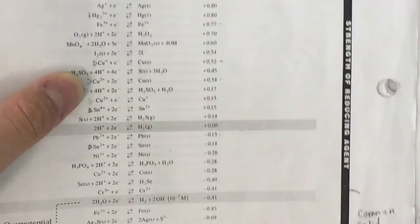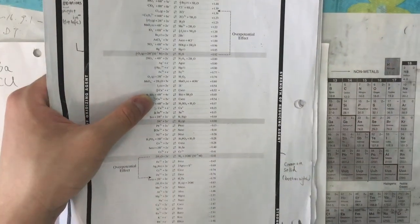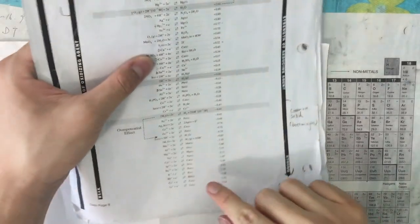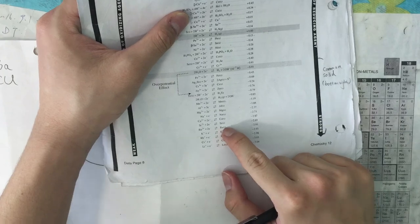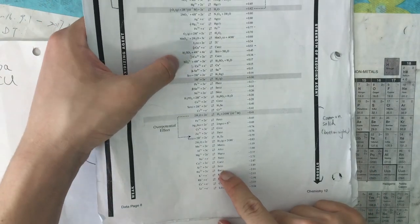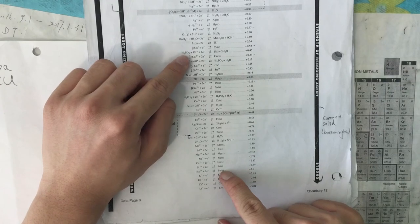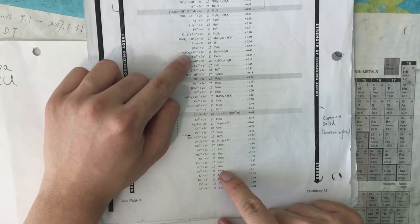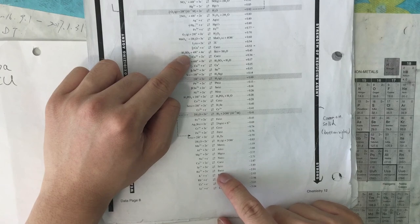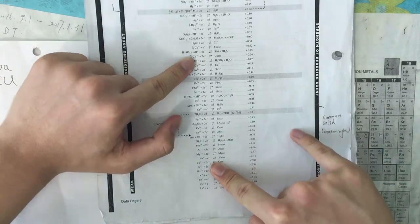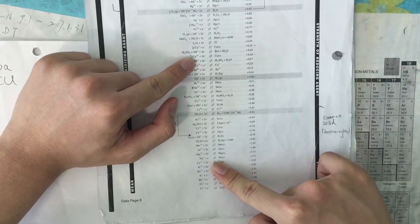The only reaction that's going to happen is going to be a strong-to-strong reaction. We have to notice that barium is here and copper is here. In order for barium and copper to react, copper²⁺ has to be the reactant and barium solid also has to be the reactant — strong-to-strong — to allow the reactions to happen.